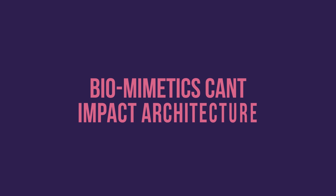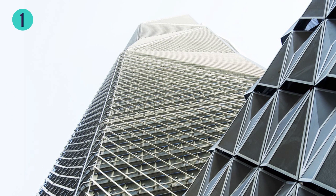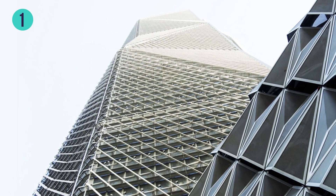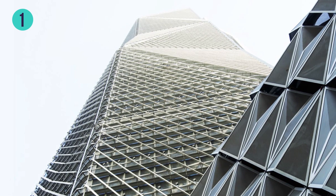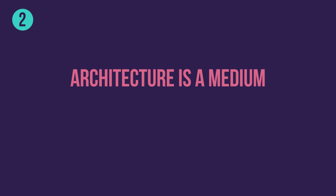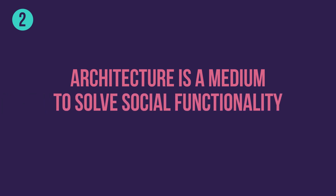Biomimetics is not able to impact architecture as it did with engineering because of two reasons. One, architecture operates on a large-scale structure where macro organism optimization tends to break down. Two, architecture is a medium to solve social functionality, whereas biomimetics tends to solve technical functionality.